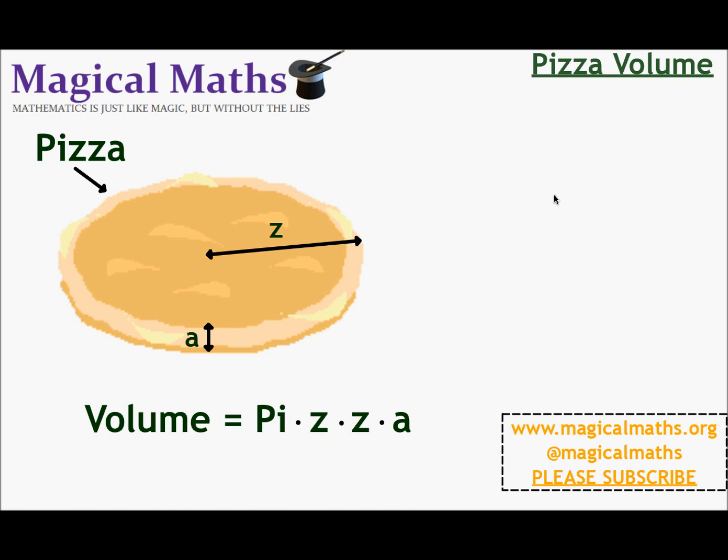If you look carefully here, the volume equals the area of the cross-section, which is the circle, pi times radius squared. So here we have pi times Z times Z and the depth here is A. So the volume equals pizza.